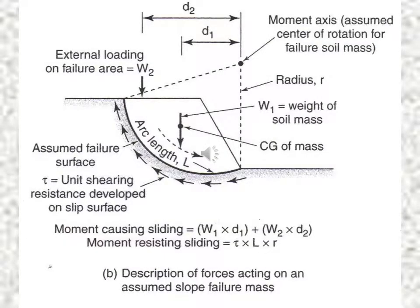The figure defines the assumed center of rotation for failure of the soil mass. The external loading W2 acts at distance D2 from the center, and the weight of the soil mass W1 acts at distance D1 from the center of rotation. The radius of the failure surface is R, with the center of gravity of the mass at the center. The assumed failure surface has tau as the unit shear resistance developed along it.